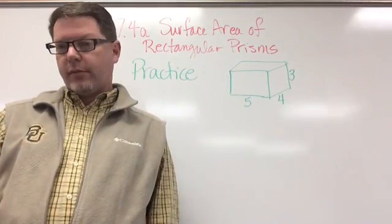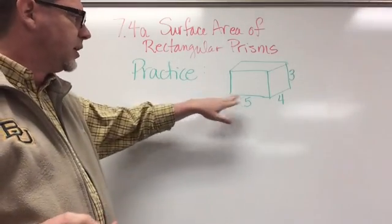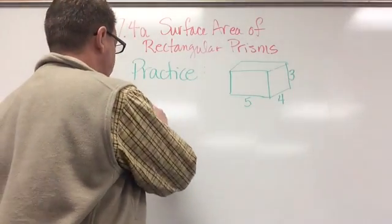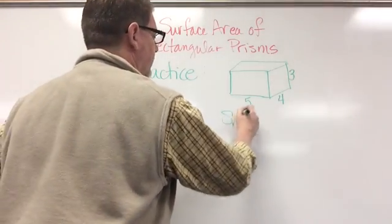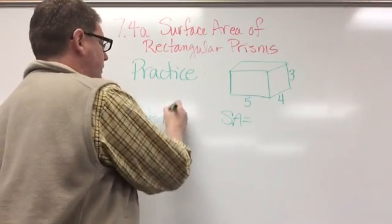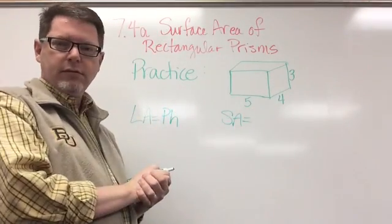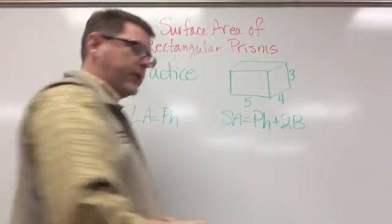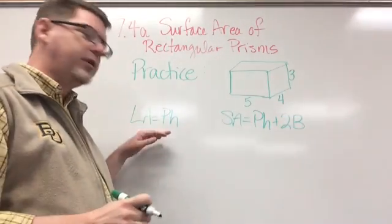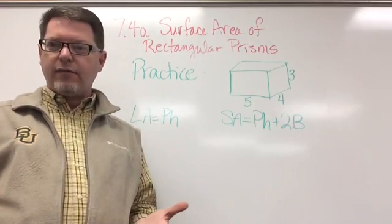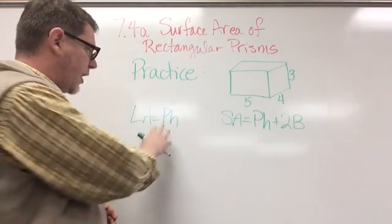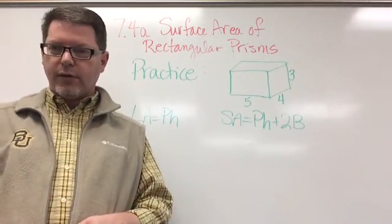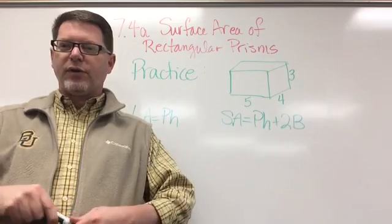Here's your practice problem. I have a rectangular prism with dimensions 5, 4, and 3. I want you to find the lateral area and the surface area. Remember, the formula for lateral area is capital PH, and the formula for surface area is capital PH plus 2 times capital B. Please show your numbers, write them down, fill them in, and then take a picture of your practice problem and submit it through Edmodo so I can see what you know, and we'll go over this more in class.